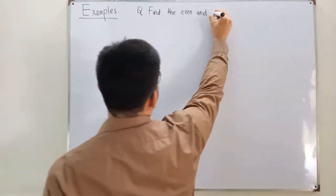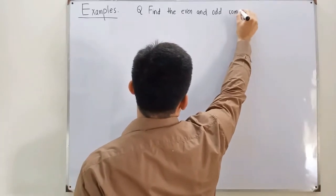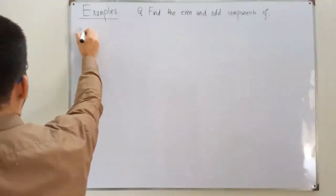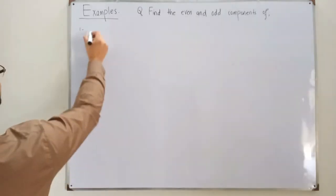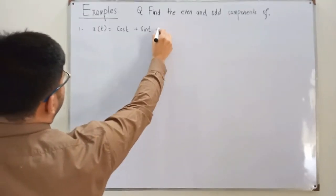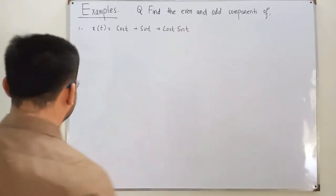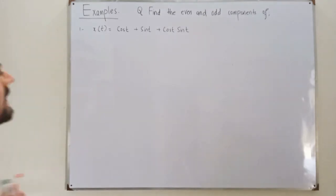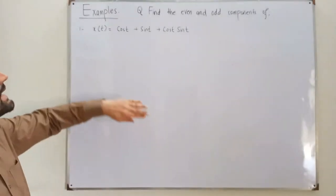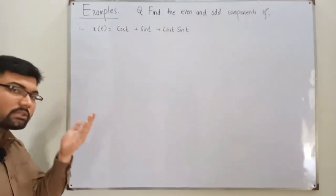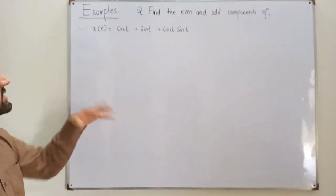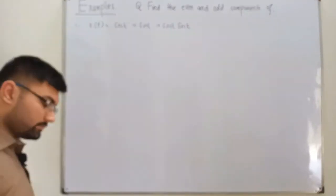The first signal is x(t) = cos(t) + sin(t) + cos(t)·sin(t). If we are asked to find whether this signal is even or odd, we directly time-reverse it by putting t equal to minus t. If x(-t) equals x(t), it is even; if it equals negative x(t), it is odd; otherwise it is neither.